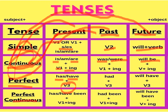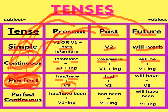In past perfect tense, 'had' is used with both singular and plural, plus the third form of the verb. Whenever you hear 'perfect,' remember to use the third form of the verb. Only the auxiliary verb changes — in present perfect we used 'has' and 'have,' in past perfect we use 'had' plus the third form.